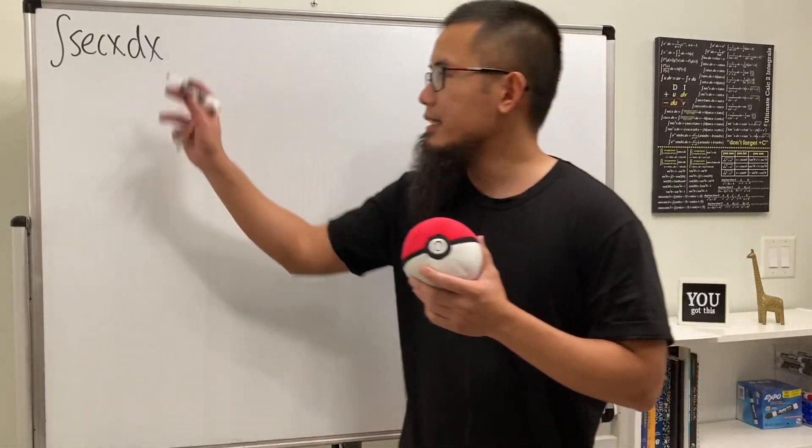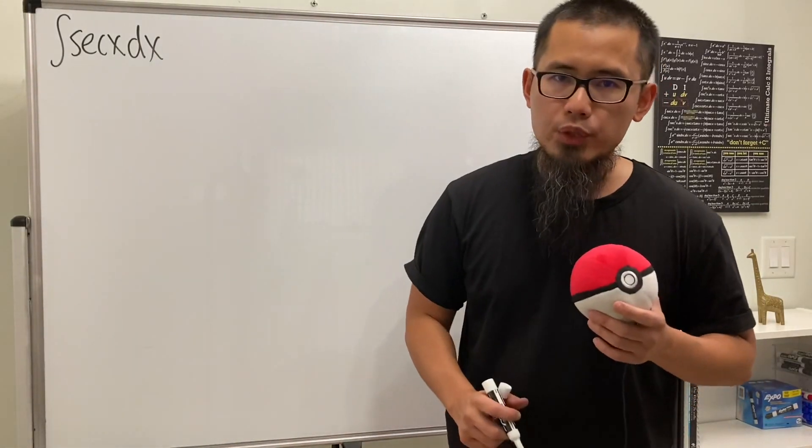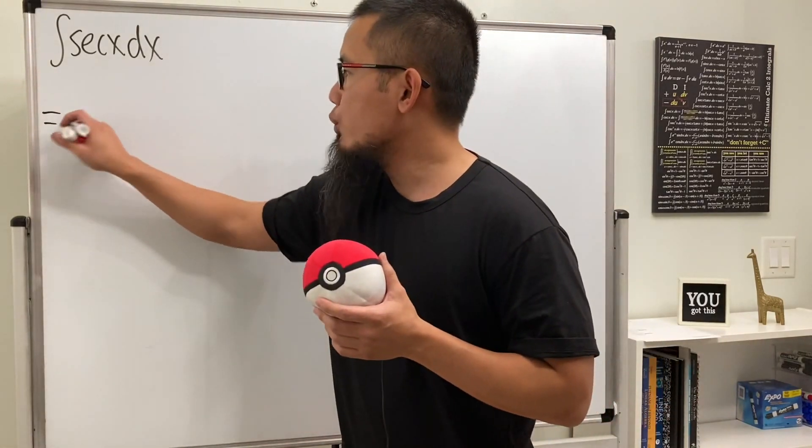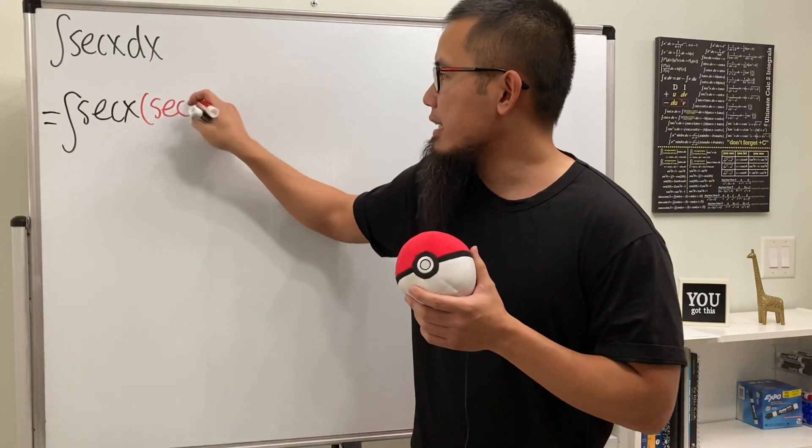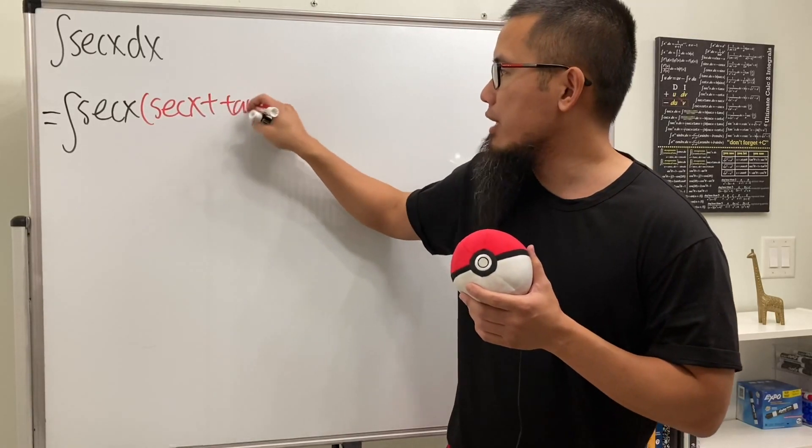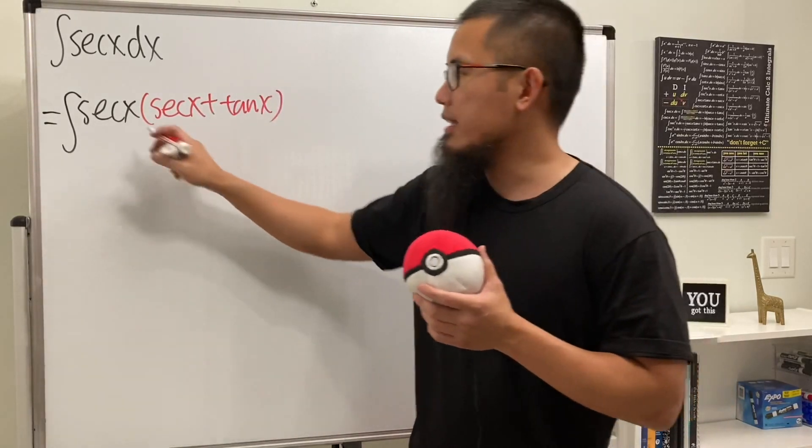Let's take a look at the integral of secant x, and this is the standard way to do it. I will tell you that we will multiply the secant x right here by secant x plus tangent x over secant x plus tangent x. And of course, we also have to divide this right away.